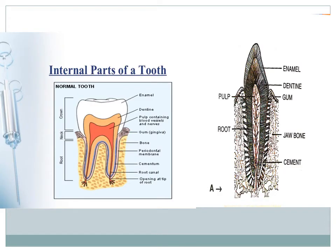This is the structure of a tooth — this diagram shows incisors and canines, and this one shows premolars and molars. Each tooth consists of a part which is above the gum, called the crown, and the part below the gum is called the root, which is embedded in a bony socket of the jaw bone. The root consists of a single process or fang as in incisors and canines, or two processes as in premolars and lower molars, and three in upper molars. The neck is a small constriction between the root and the crown.